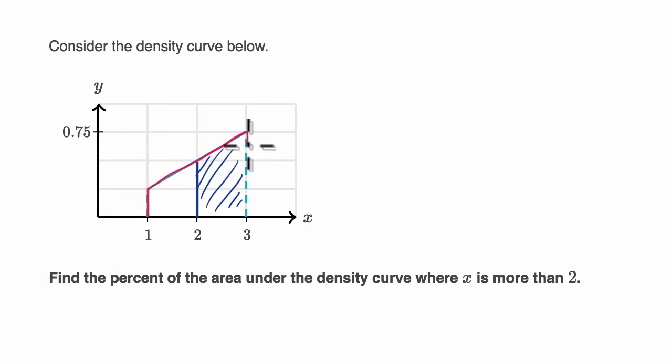And that should be equal to one, because all density curves have an area of one under the total curve. So let's first verify that. There are a couple of ways to think about it. We could split it up into two shapes, or use the formula for an area of a trapezoid. Let's use the formula for an area of a trapezoid.